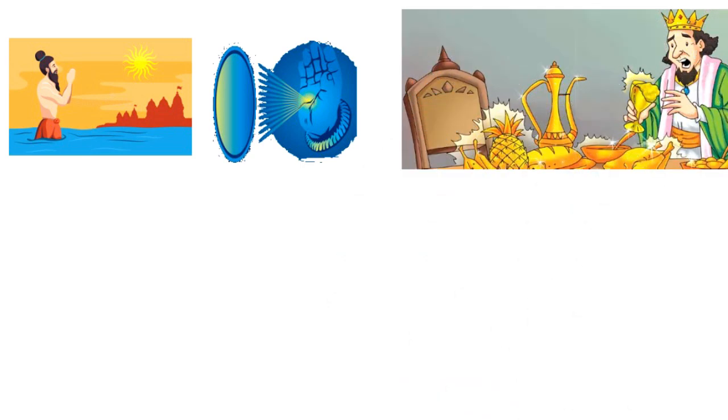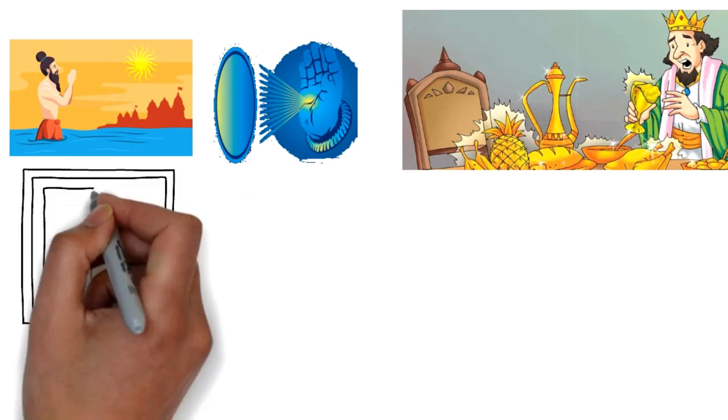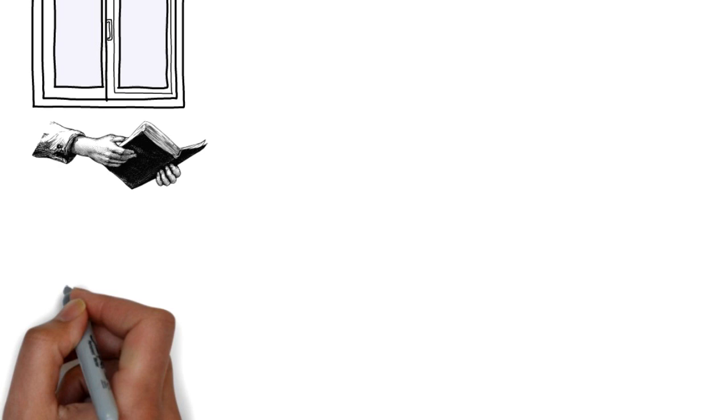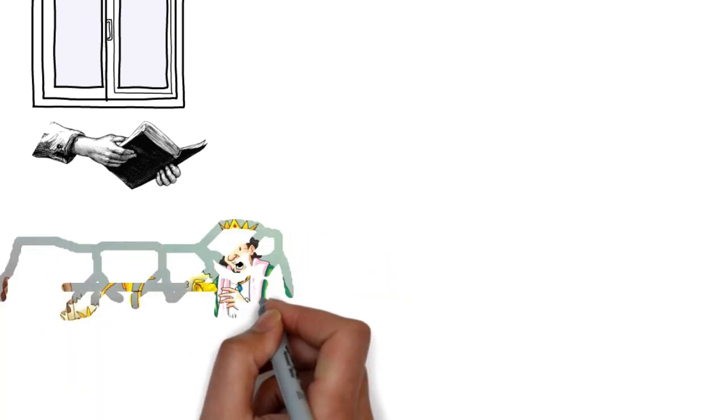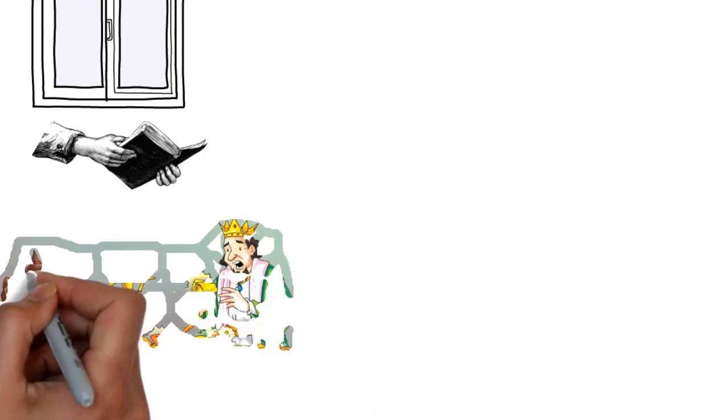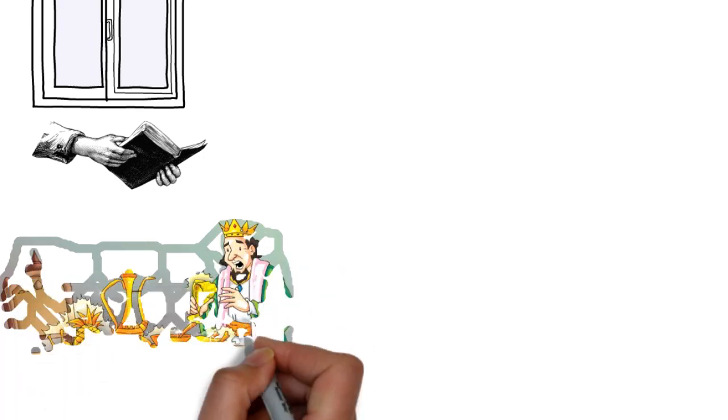He looked out of the window and saw his daughter playing in the garden. He decided to give her a surprise and thought she would be happy. But before he went to the garden, he decided to read a book. The moment he touched it, it turned into gold and he could not read it. When he sat to have breakfast, the moment he touched the fruit and the glass of water, they turned to gold.